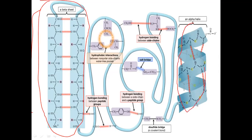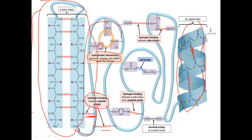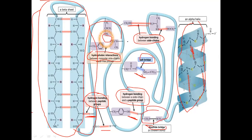In the detailed structure you can see the alpha helix and the beta sheet, along with various interactions: hydrogen bonding between peptide groups, hydrophobic interactions between non-polar side chains, ionic bonds or salt bridges, hydrogen bonding between side chains, hydrogen bonding between side chains and the peptide group, and disulfide bridges between cysteine residues. These different types of interactions between beta sheets and alpha helices result in the tertiary three-dimensional structure of the protein.